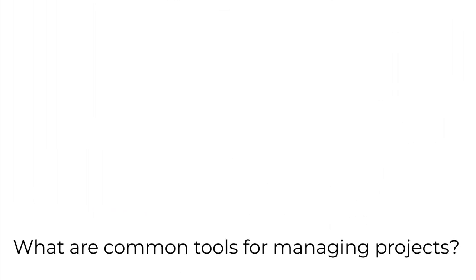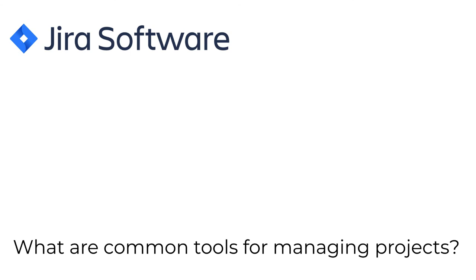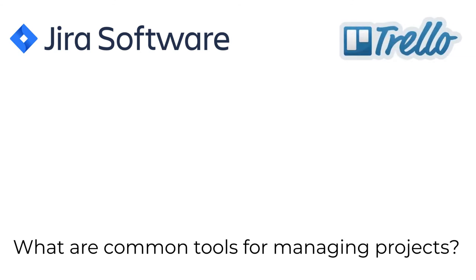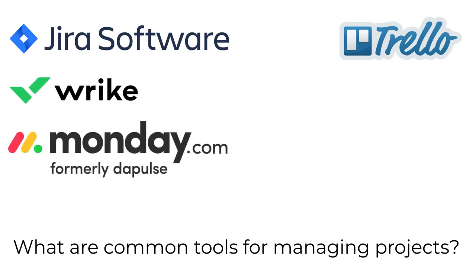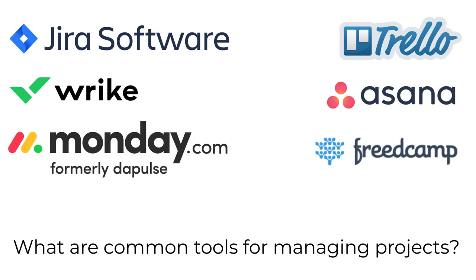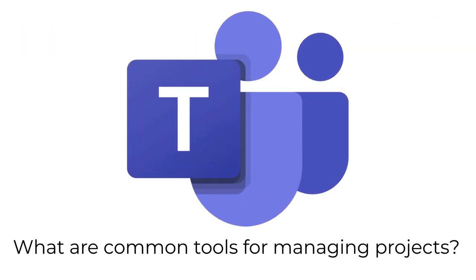All businesses whose work is project-based adopt software tools to make managing projects more successful. These tools support either agile or waterfall project management. In software firms, it's common to use JIRA to track bugs or issues in software code while it's being developed. The company that created JIRA also created a free tool called Trello. Another freemium tool is Wrike, and there's also Monday.com for enterprises. Additional free tools include Asana and Freedcamp. Many tech workplaces use Slack for project team communication. Microsoft has sold Project for a long time, and many enterprises today are using Teams, which combines project management, communication, and content management into a single tool.